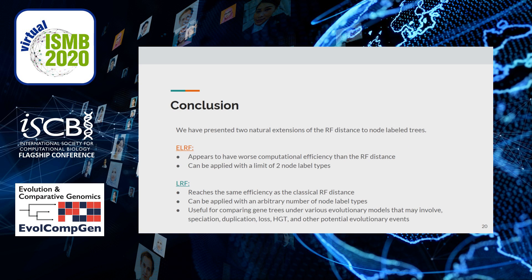We have presented two natural extensions of the RF distance to node-labeled trees. On one hand, ELRF appears to have worse computational efficiency than RF and can be applied with a limit of two node label types. On the other hand, LRF reaches the same efficiency as the classical RF distance and can be applied with an arbitrary number of node label types. These characteristics make it very useful for comparing gene trees under evolutionary models that may involve speciation, duplication, loss, horizontal gene transfer, and other potential evolutionary events. Thank you for listening.